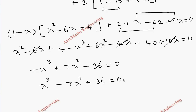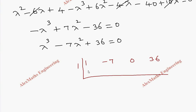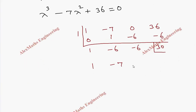We solve this cubic equation using synthetic division. Writing the coefficients: 1, minus 7, 0, and 36. Trying lambda equals 1: multiply and add — the remainder is 30, not 0, so 1 is not a factor.